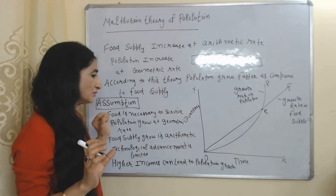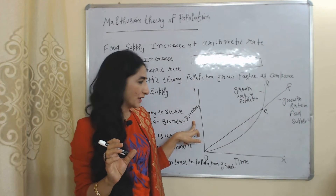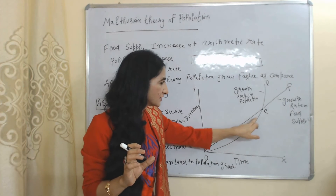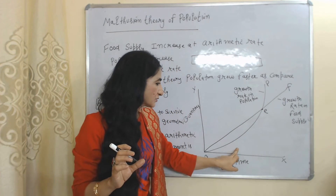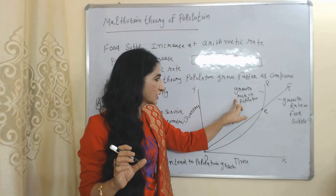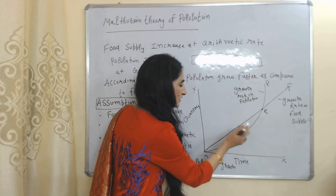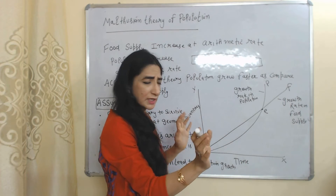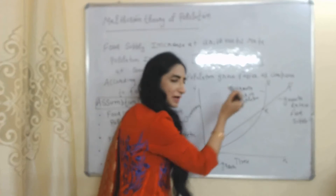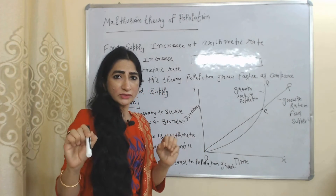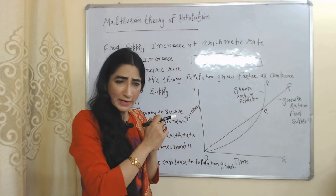In this diagram, on the x-axis we have time period and on the y-axis we have quantity. The OF line shows the growth rate in food supply and the OP curve shows the growth rate in population. You can see food supply is growing at a very constant, slow rate, but population is growing at a very fast rate, so the growth rate in population is faster compared to growth in food supply.